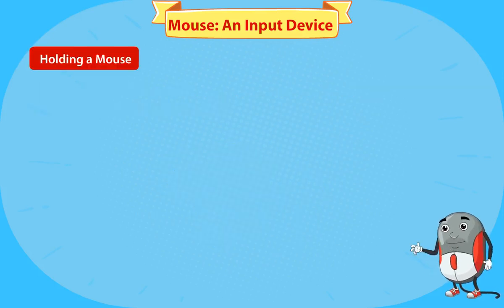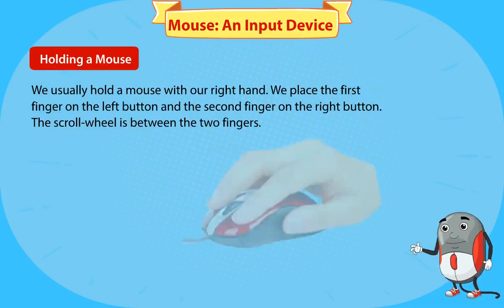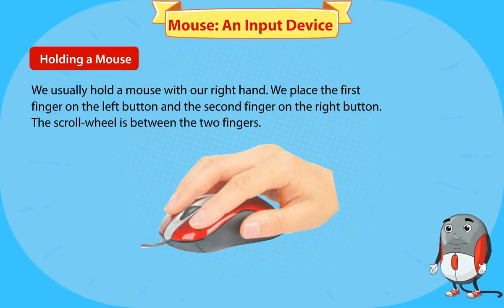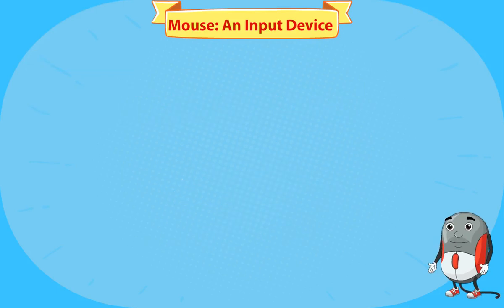We usually hold a mouse with our right hand. We place the first finger on the left button and the second finger on the right button. The scroll wheel is between the two fingers.